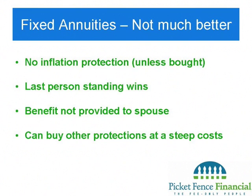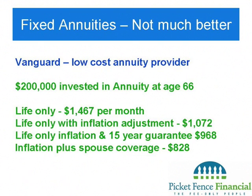What about fixed annuities? With a fixed annuity, you give the insurance company a lump sum and they pay you out over the rest of your life. But there are problems. First, they don't have inflation protection unless you pay extra for it. Second, it's the last person standing who wins — if you die early, you overpay. And often there's no benefit to the spouse unless you pay for that too.